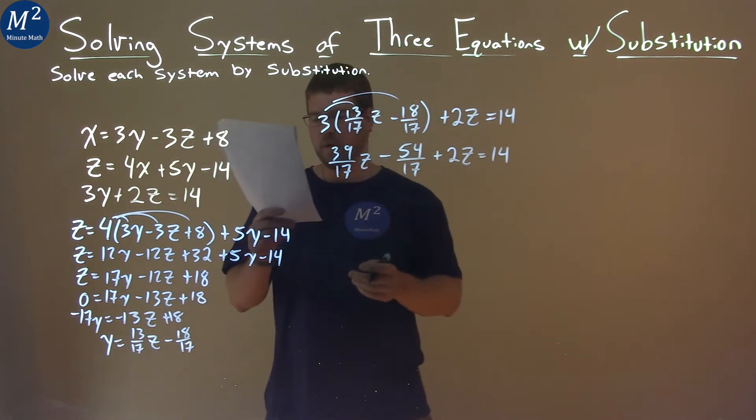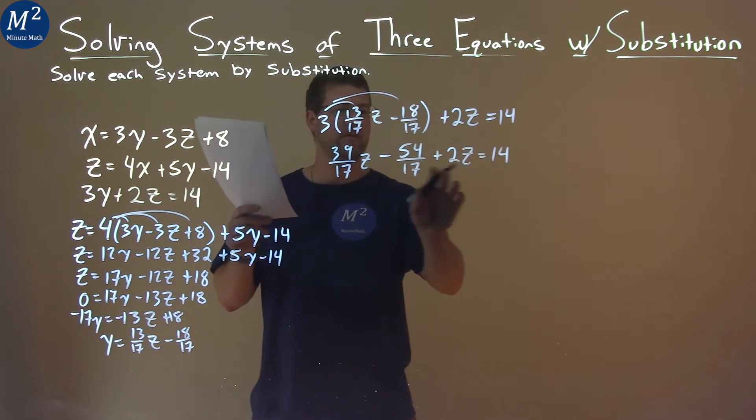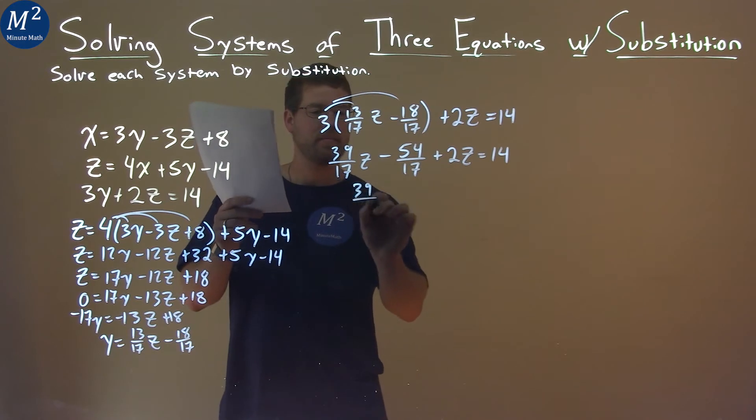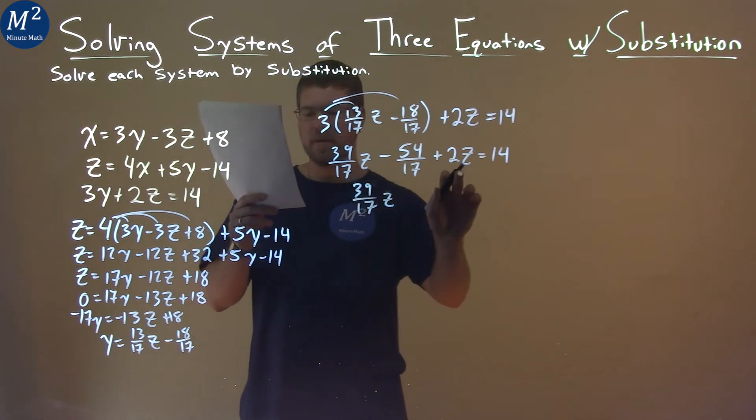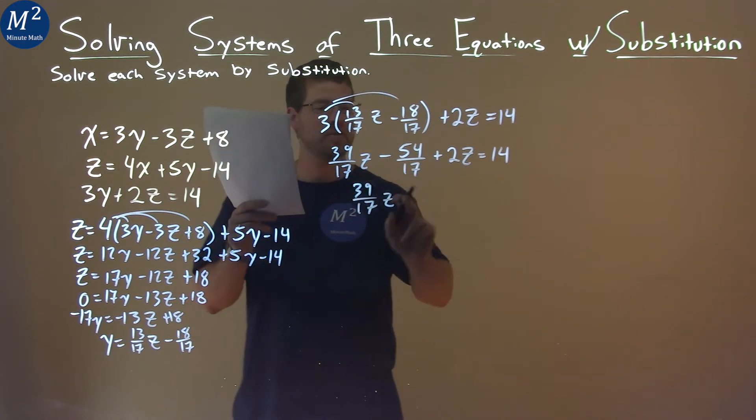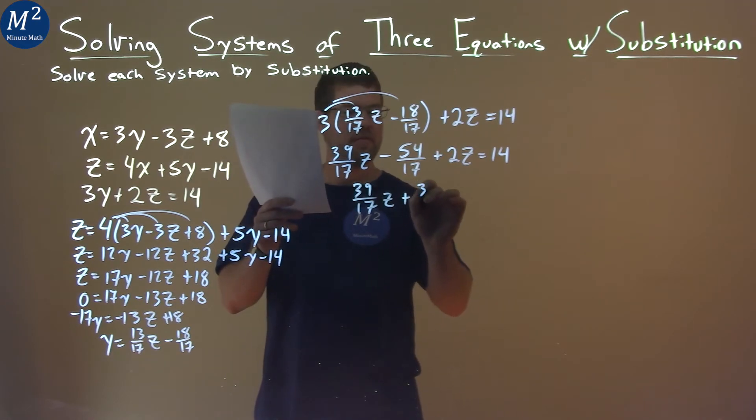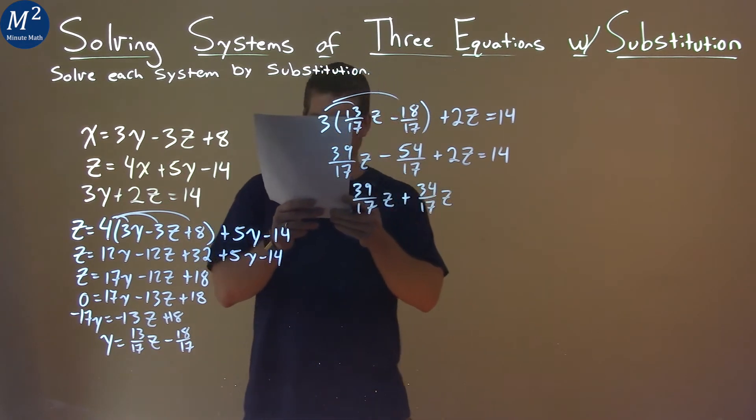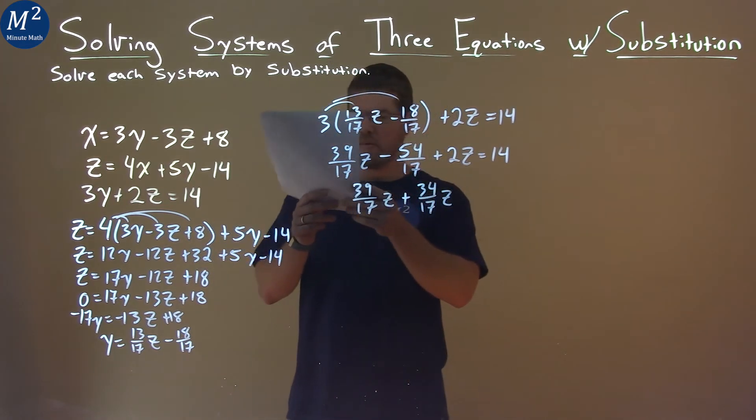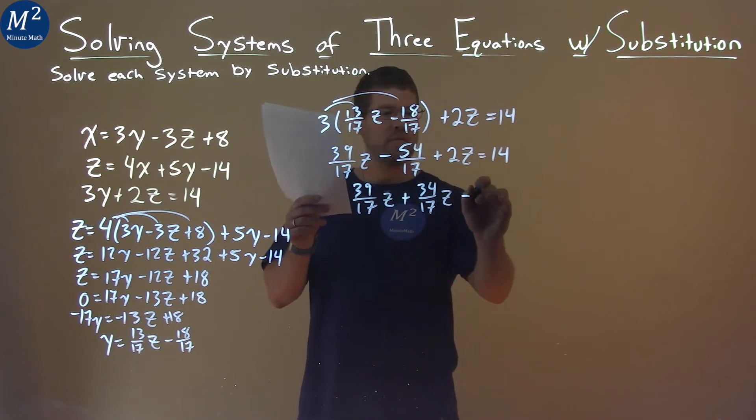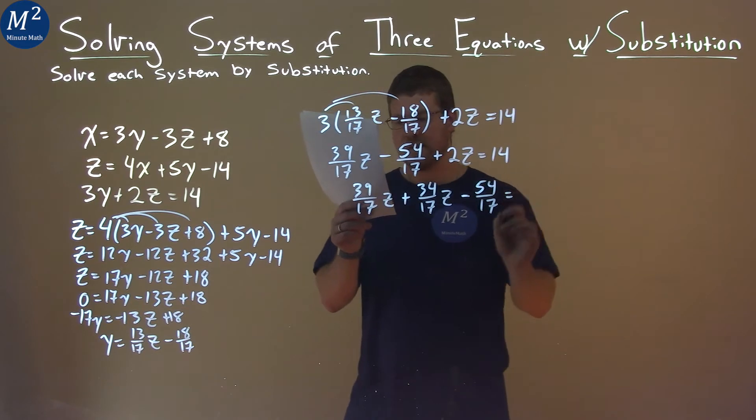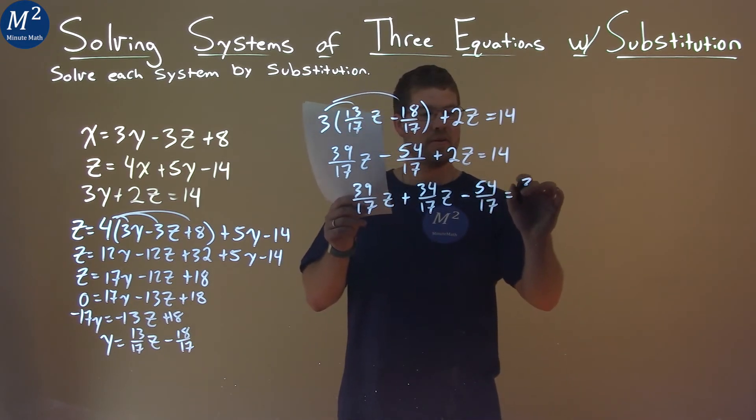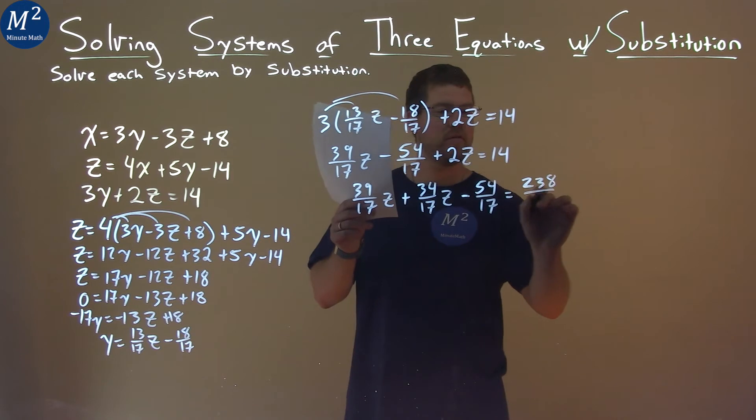From there, we want to combine our like terms where we can, and we want to rearrange this and add them together. So, 39 over 17z. And I bring this 2z over. And 2z, in terms of the same fraction, is the same thing as 34 over 17z. Then, let me make sure I follow my notes here correctly. And then we have minus a 54 over 17 here, equals 14 in terms of 17, is 238 over 17.